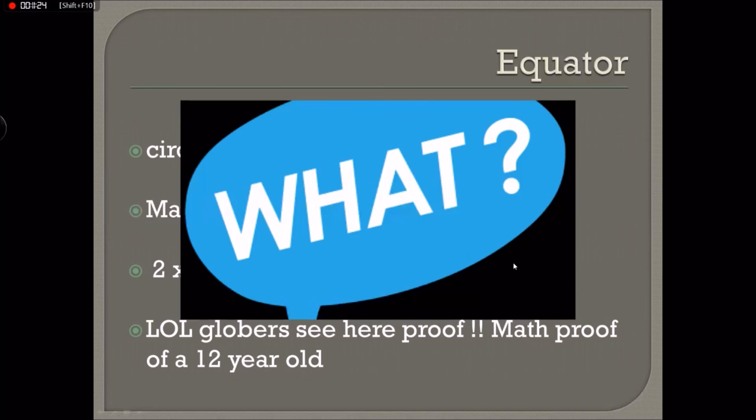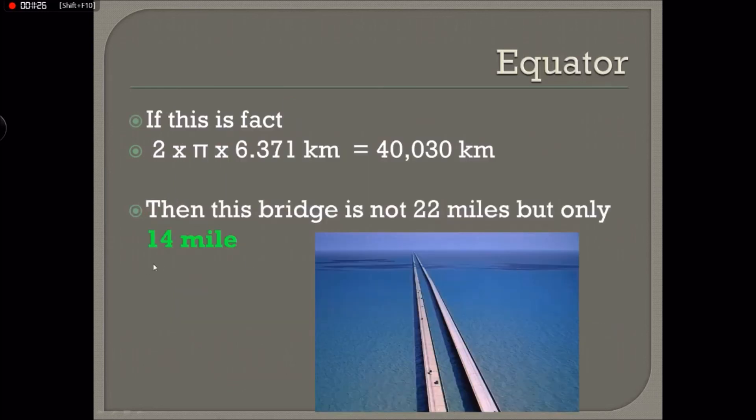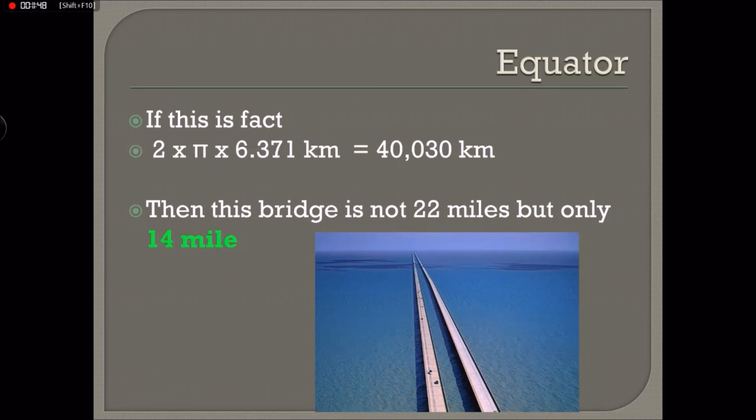What? What? Why? Oh, if that is a fact and the circumference of the equator is 40,000 kilometers and therefore the radius is 6,371 kilometers, then this bridge is not 22 miles as claimed by everybody, but it's only 14 miles. But come on, why?